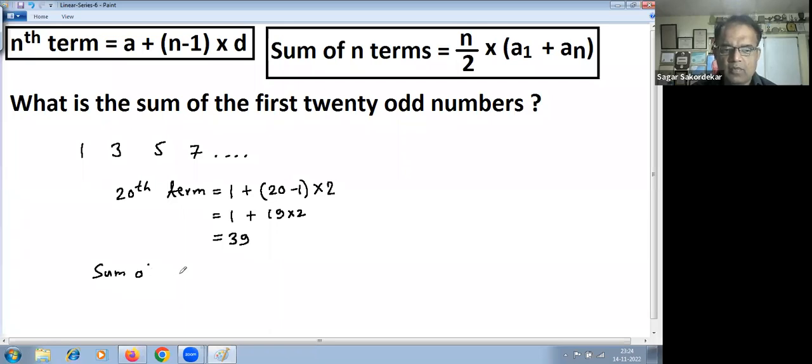Sum of 20 terms equal to n is 20 here divided by 2 into a1, that is first term is 1, last term is calculated, that is 20th term is 39. Now simplify: 20 divided by 2 is 10, so 10 into 1 plus 39 is 40, which is 400.